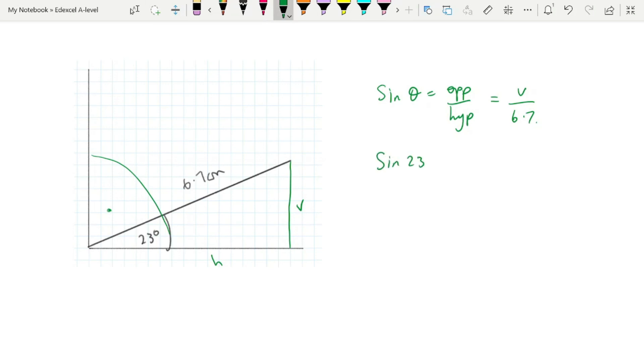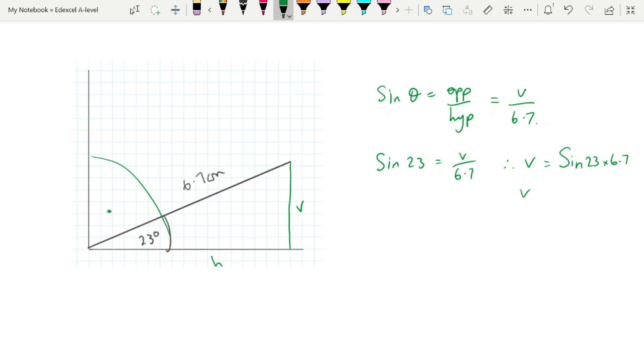That gives us V being 2.62. Equally, we can say that the cos of 23 is going to be equal to the adjacent side, which here we're calling H, our horizontal component, over our hypotenuse, which is 6.7, which means H, then, is equal to cos of 23 times 6.7, 6.17.